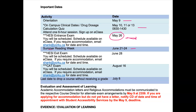Your second exam is the HESI exit exam and it will be June 28th — again, it's not negotiable. Make sure you're not working a night shift the night before or a day shift that day. If you require accommodation, make sure you've emailed Shandana. The CAT exam is scheduled during the exam period on August 16th — again, not negotiable. If you require accommodation, make sure you notify Shandana.